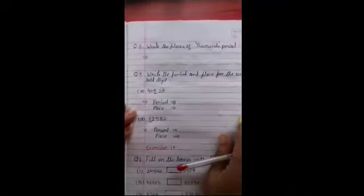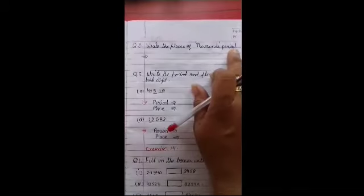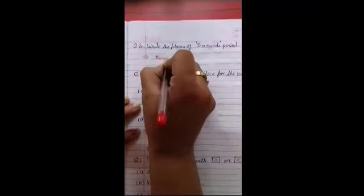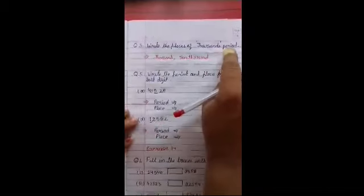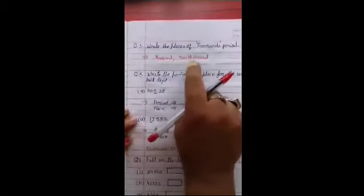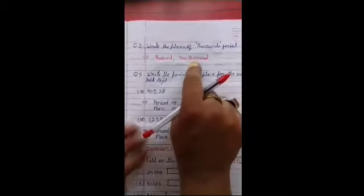Question number three of your book. Write the places of thousand period. Yarni thousand period mein korn kornsi places aati hai. Tho humne jo aage table banaya tha, usmein hum dekhte hai ki pahli place toh ho ti hai hamari thousand ki, aur dusri place hoti hai ten thousand ki. Tho ye period or thousand mein places hoti hai thousand and ten thousand.